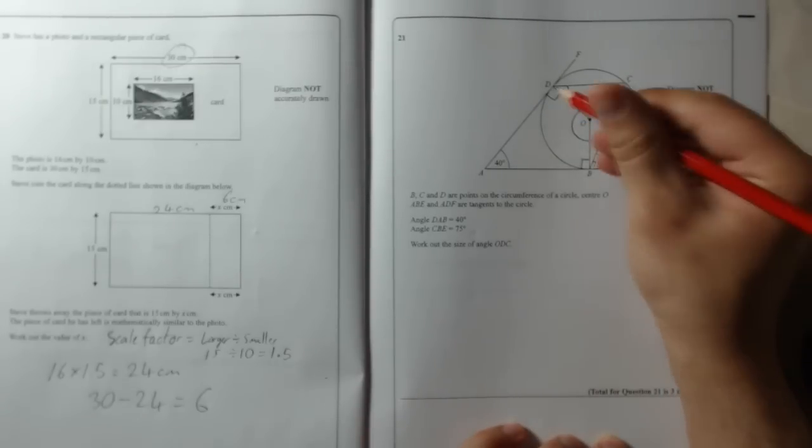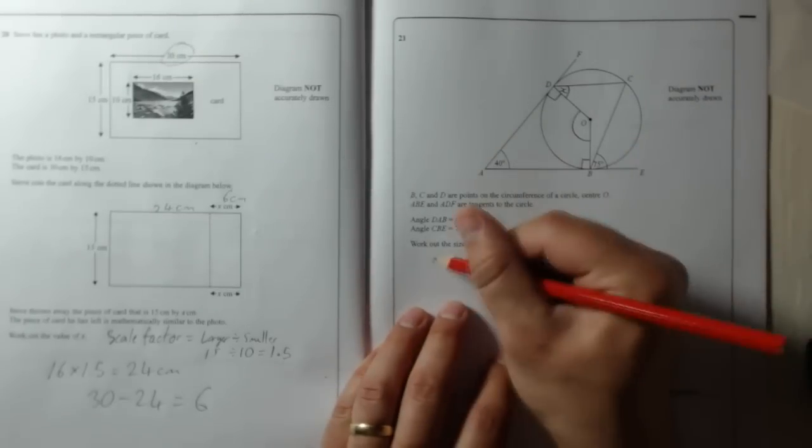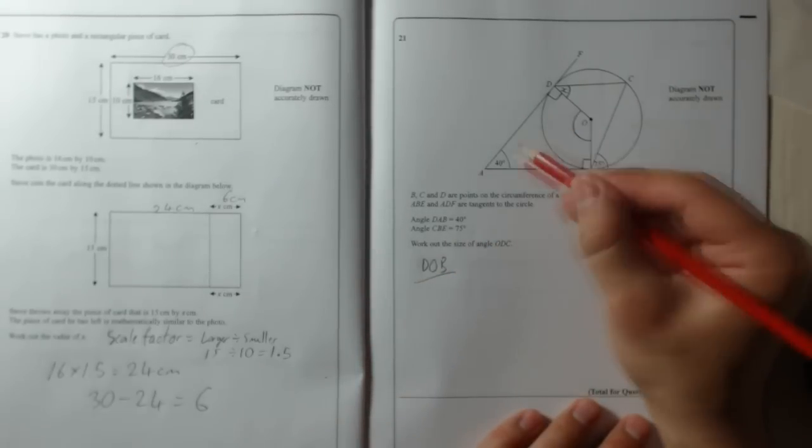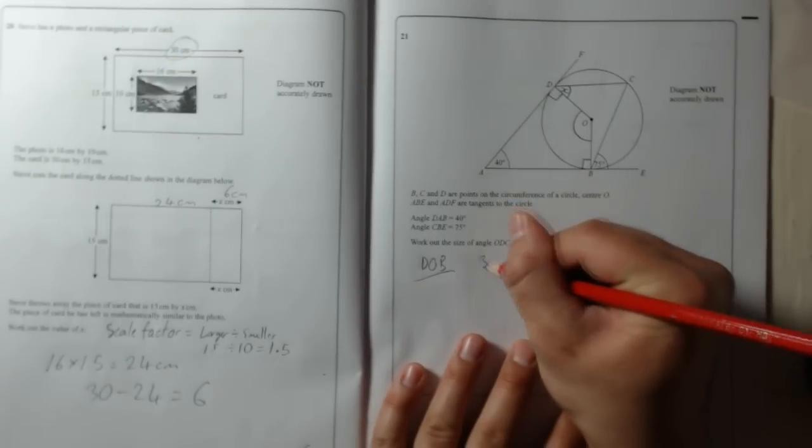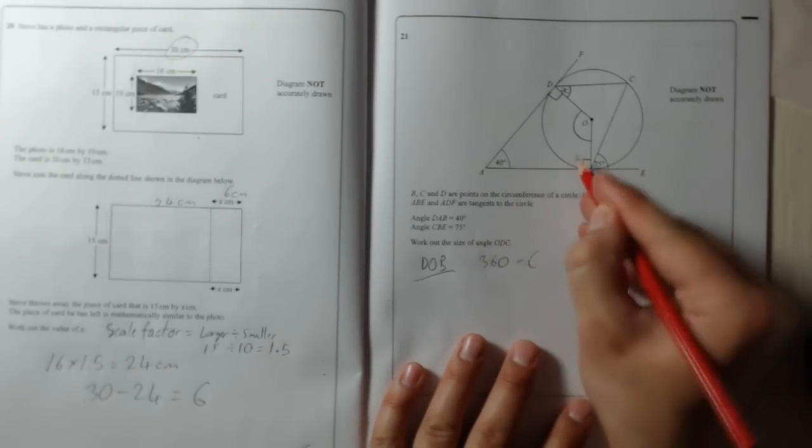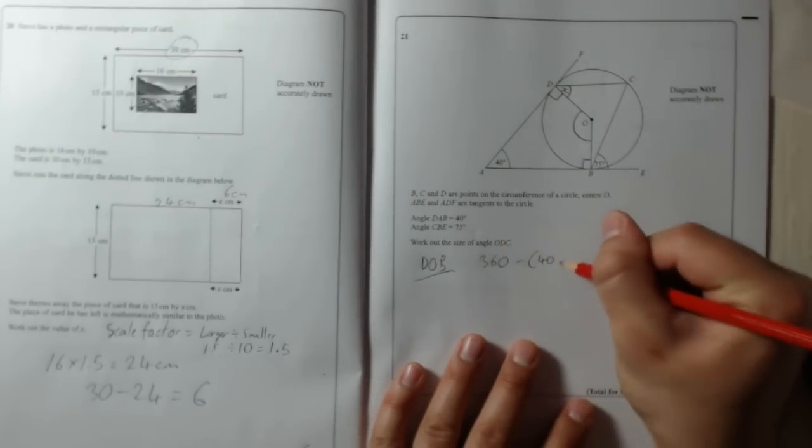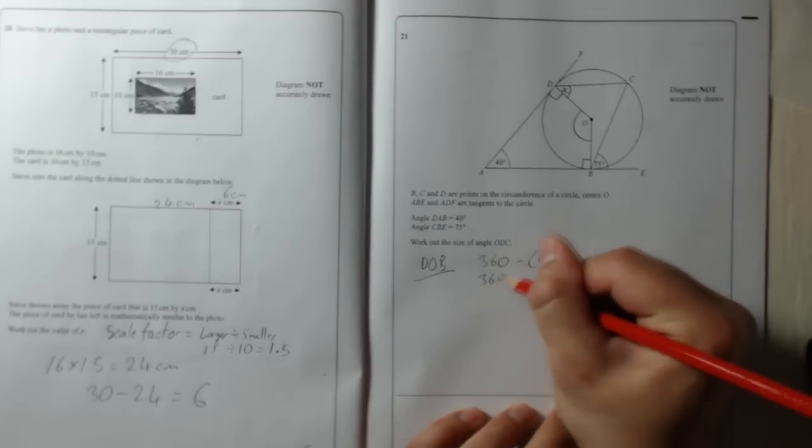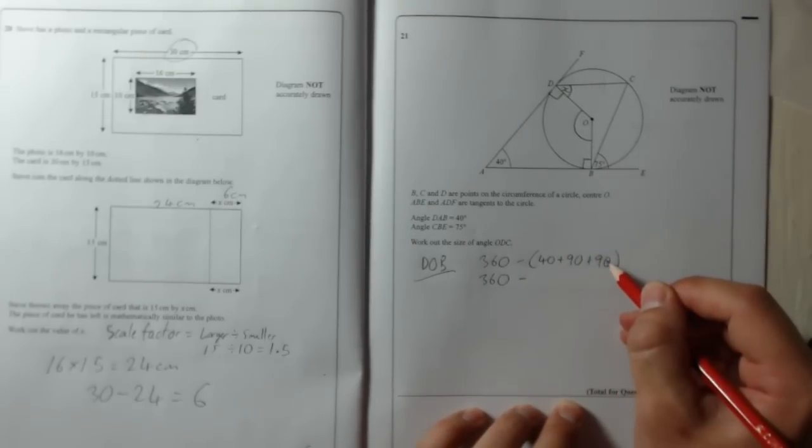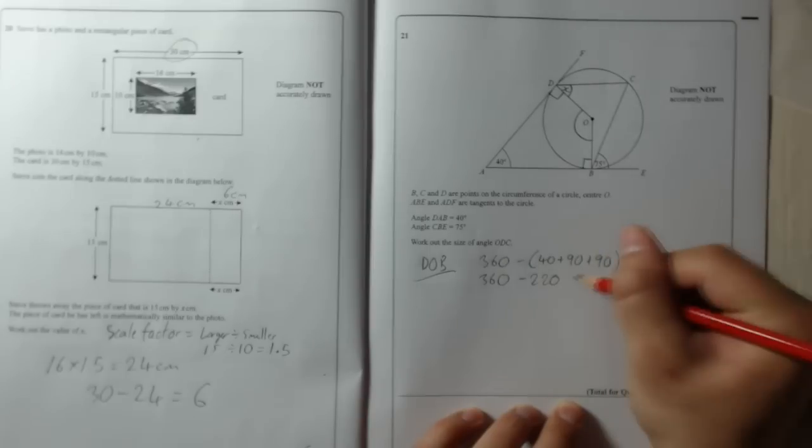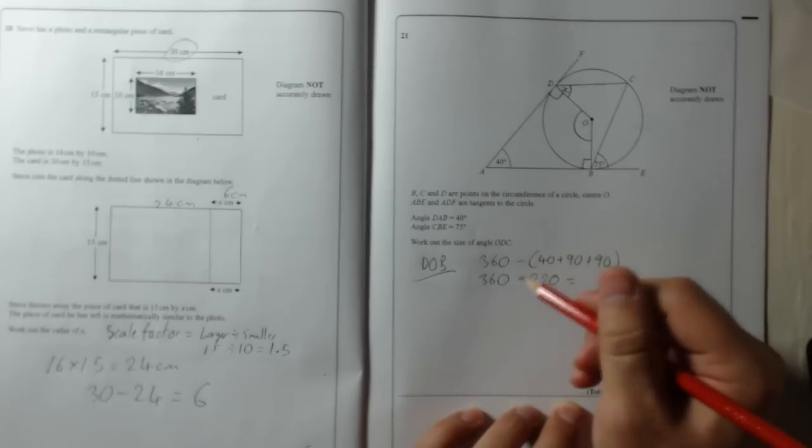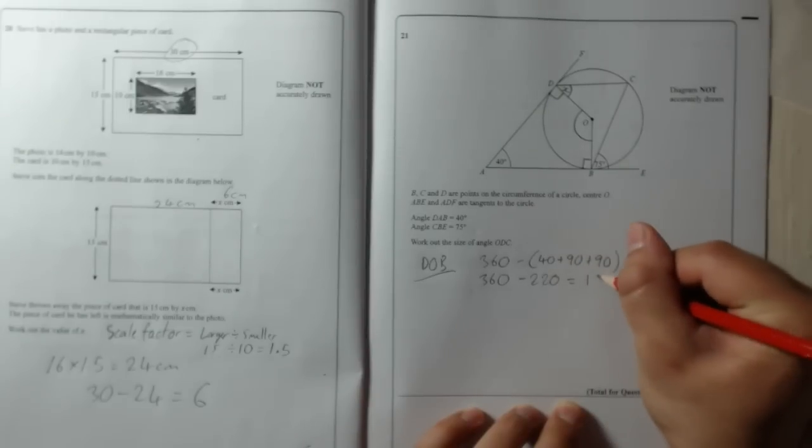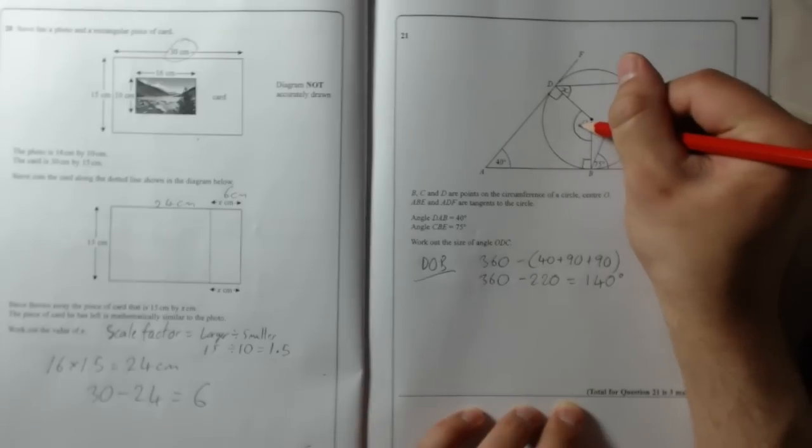Okay, so that is DOB. What we're going to do, that's all 360. It's going to be 360 take away the other angles added up, so 40 plus 90 plus 90. So that is 360 take away 90, 180, 220. And that is 360 take away 20, 340 take away 200, 140. So that is 140.